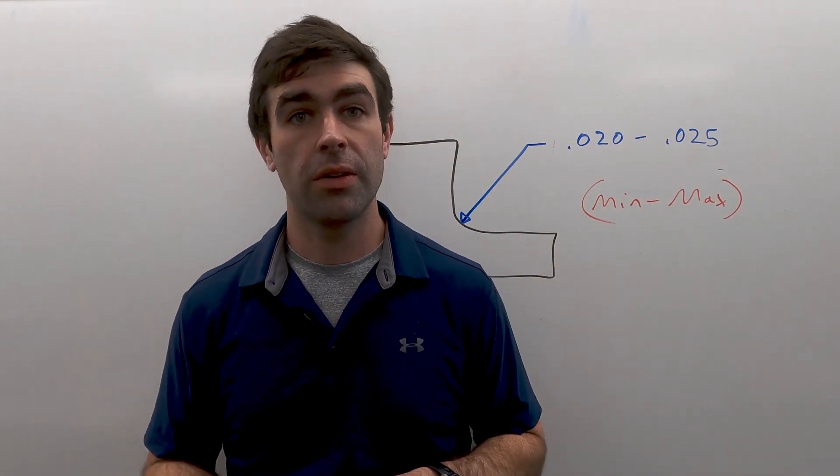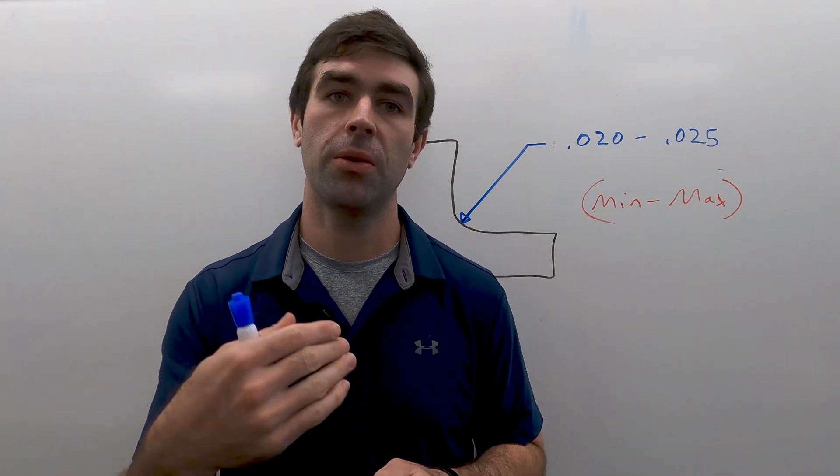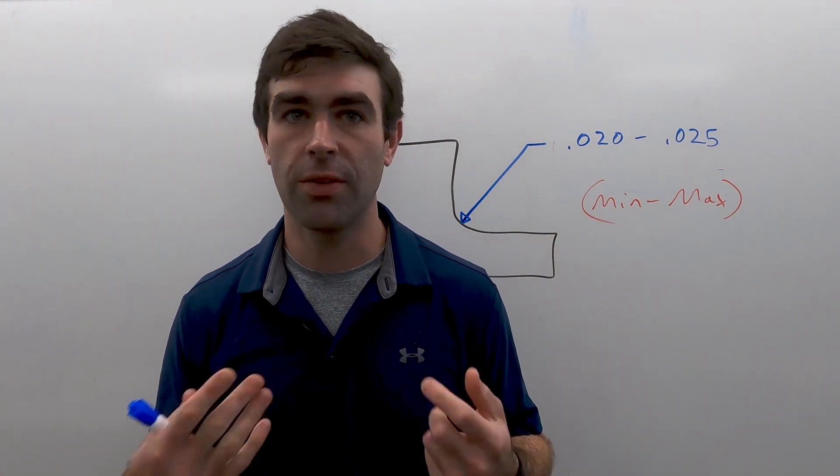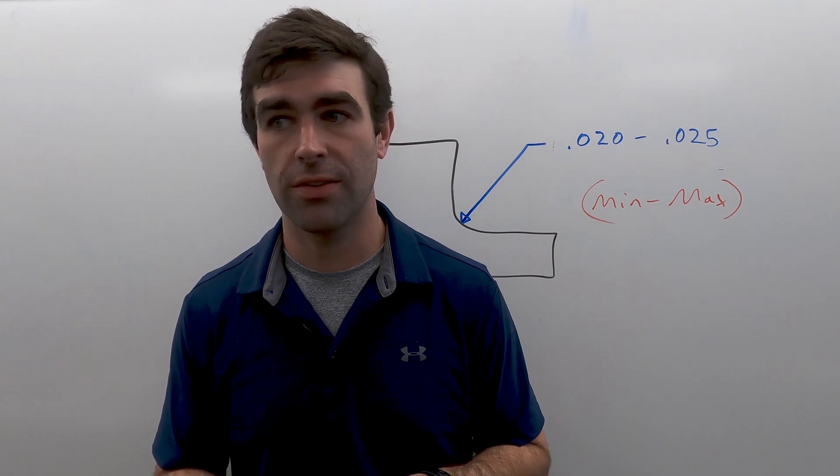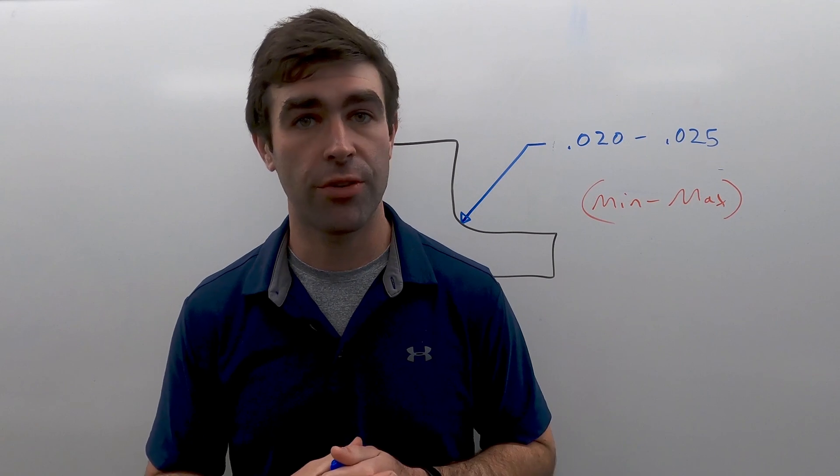So the limit dimension is shown in a note. It'll be written minimum dash maximum. So this only applies to notes. You wouldn't see this in a dimension. Sometimes you'll see this in a general note at the top of the drawing.